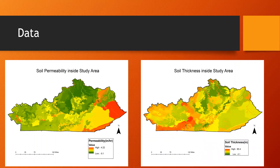On the left is the soil permeability inside the study area, and on the right is the soil thickness. These two variables are used to assess how much water will be reaching the bedrock. Soil permeability is how much water is able to pass down into the rock — the higher the permeability, the higher the chance of water dissolving the rock. Soil thickness is the inverse: the thicker the soil, the less water reaches the bedrock and the less dissolution takes place.